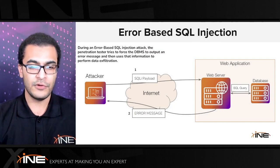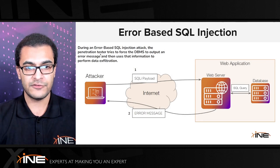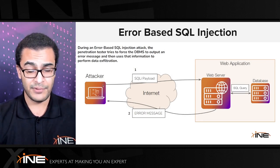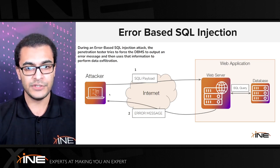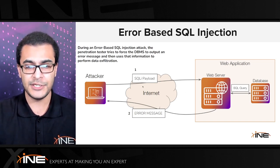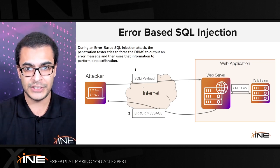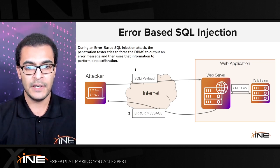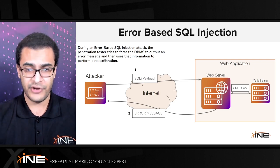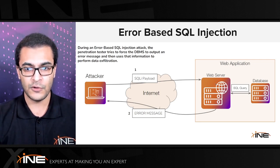Using the diagram to illustrate error-based SQL injection: we have the attacker and the web application consisting of the web server and the database. Once you've found the application input vulnerable to injection, you inject a SQL payload that will trigger an error and send it over. The web application has no input validation, so the request is sent to the database, which identifies the error and responds back to the web application.